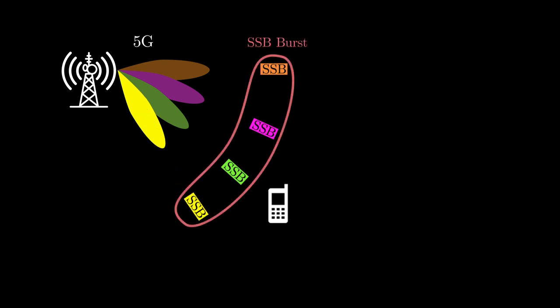To this purpose, base station periodically transmits a special signal called SSB on all beams at different time instances, which is called an SSB burst. UE has to measure SSBs on all beams and pick the one with the strongest signal power, in this case, the third beam.